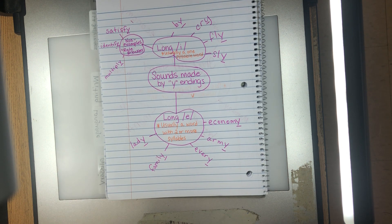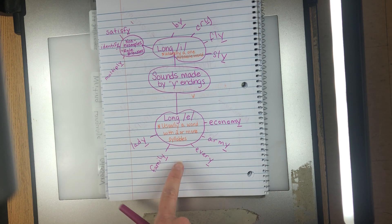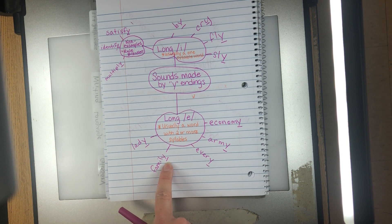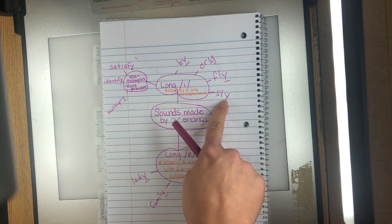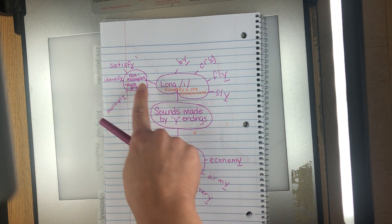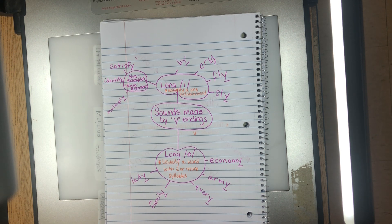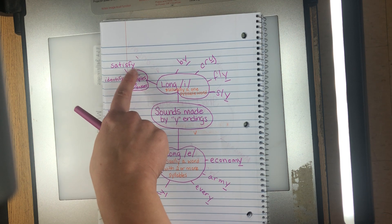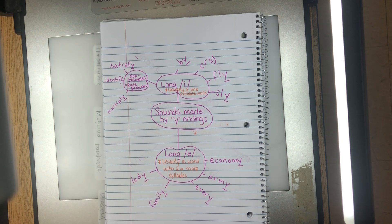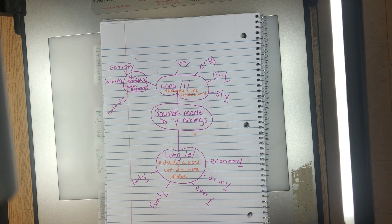What I want you to do now for this page is come up with some words, other words that you could add to the list where it ends in a Y but we hear long E. Add to the list. Can you think of other words where it ends in a Y but we hear a long I? And then can you add to the non-examples or the rule breakers? Okay, can you find a multiple syllable word where it ends with a Y but we actually hear long I? I want you to add to this, okay?